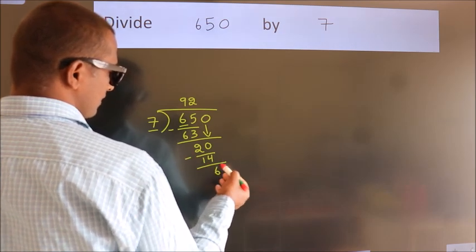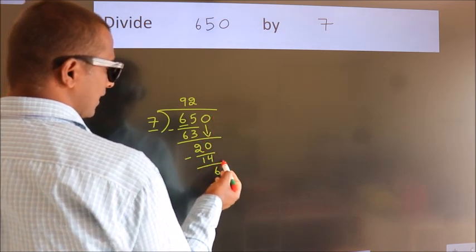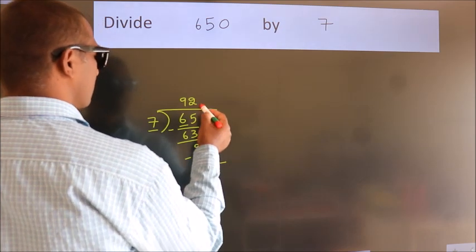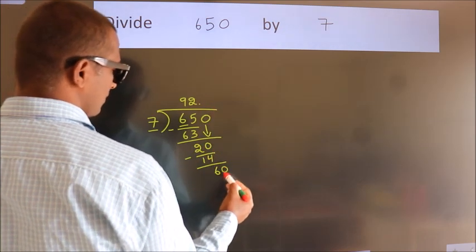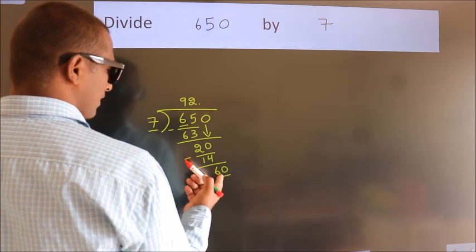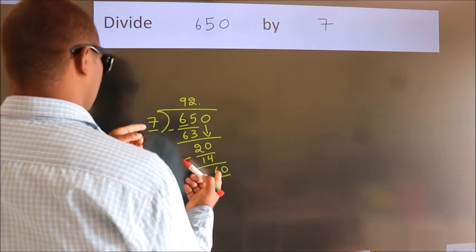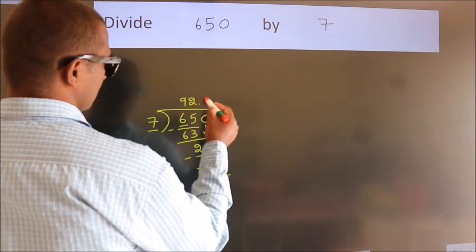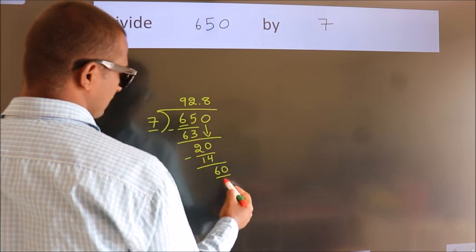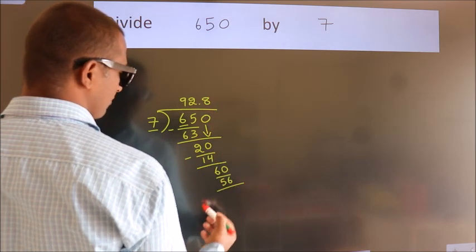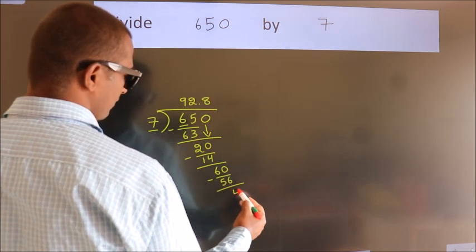After this, no more numbers to bring it down. So what we do is we put dot take 0. So 60. A number close to 60 in 7 table is 7 8 56. Now we subtract. We get 4.